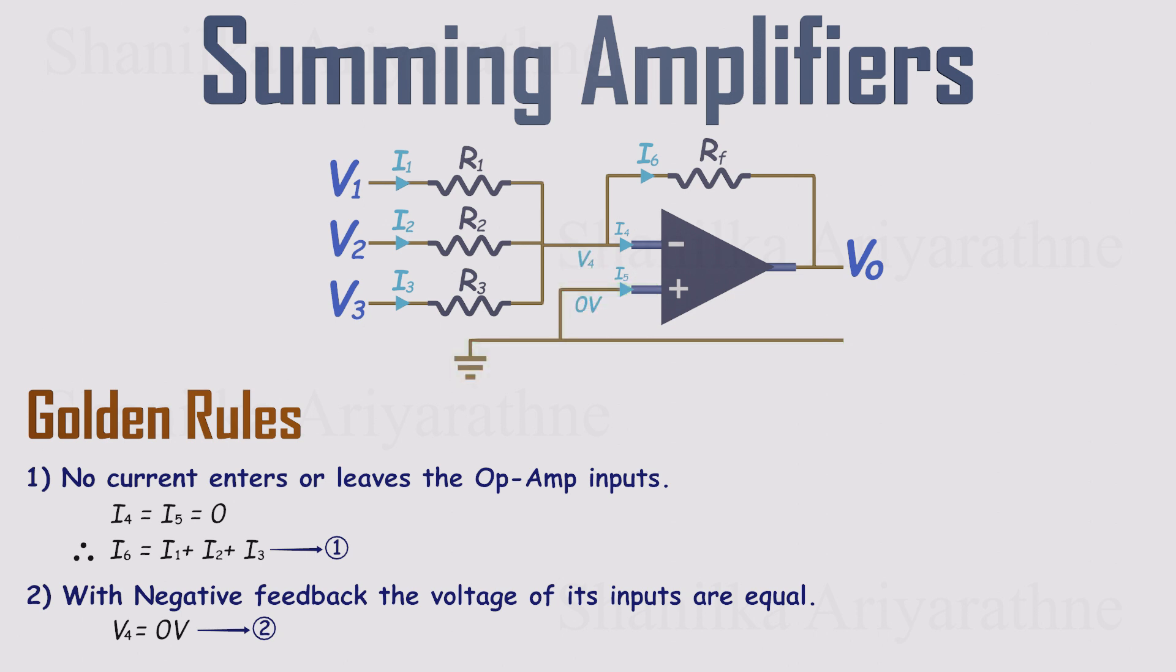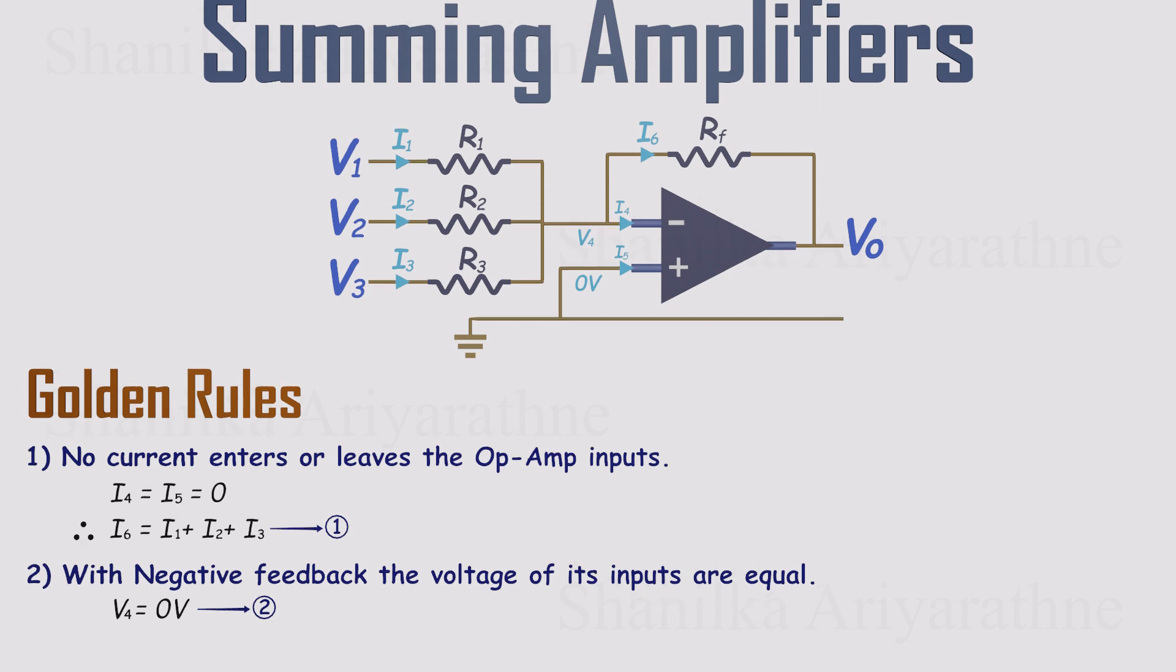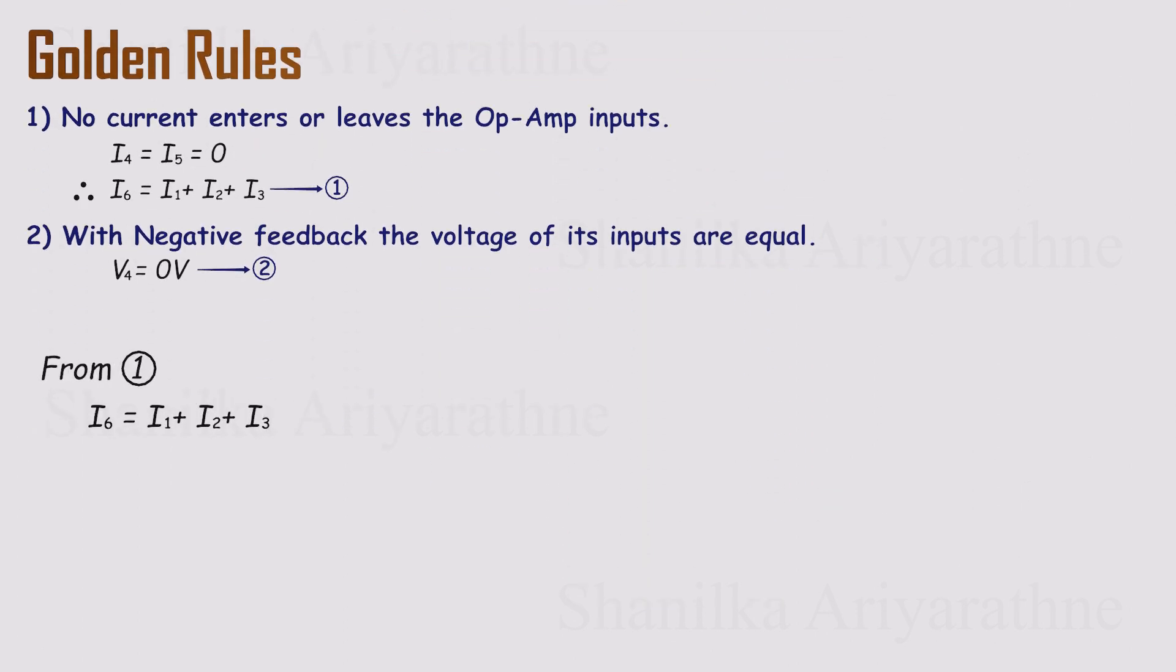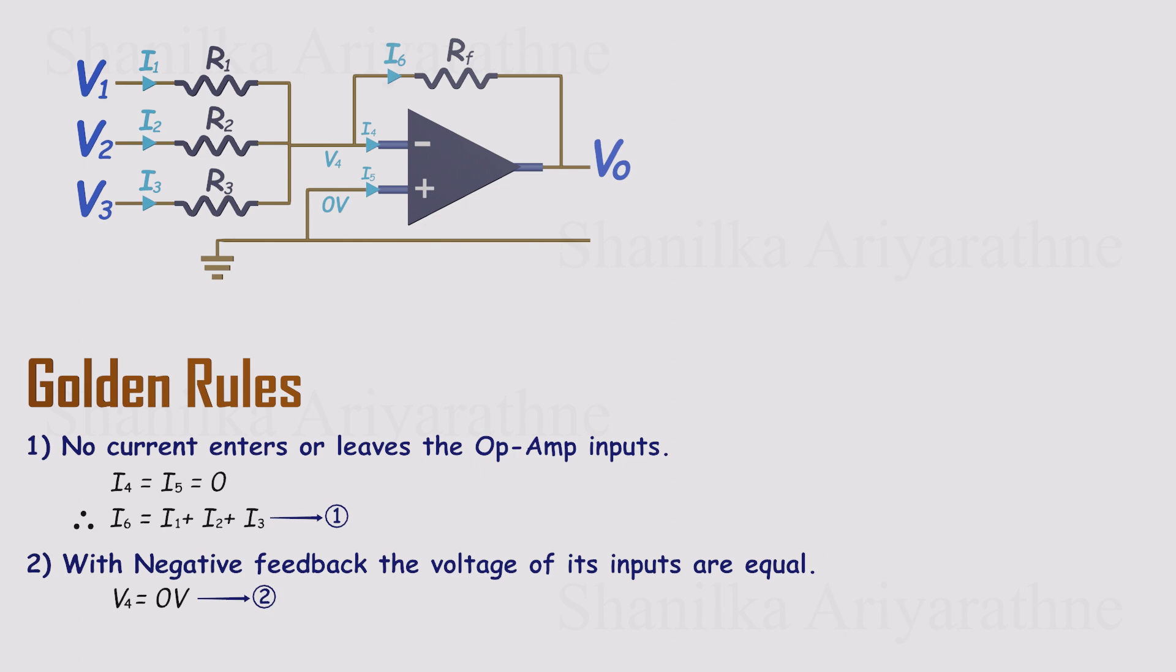With those two rules in place, we can turn currents into voltages with Ohm's law and see exactly how the output responds to the inputs. Let's start with our first relationship, I6 equals I1 plus I2 plus I3. Keep an eye on these currents.